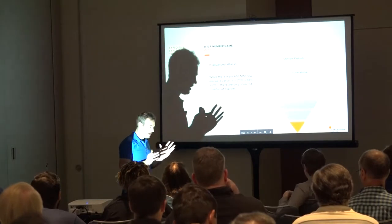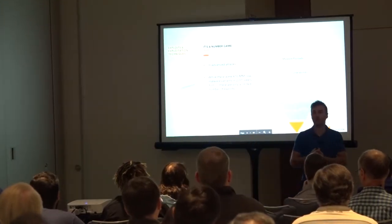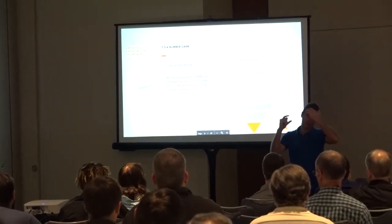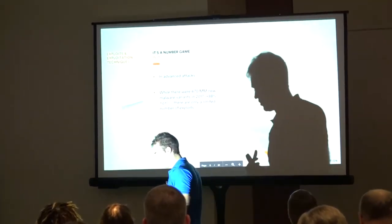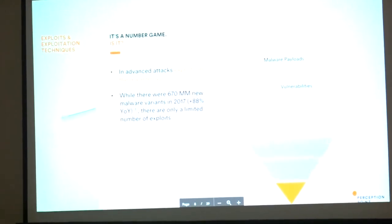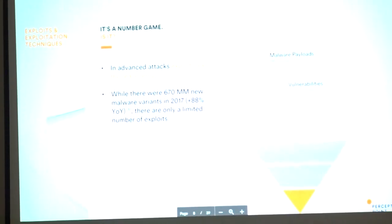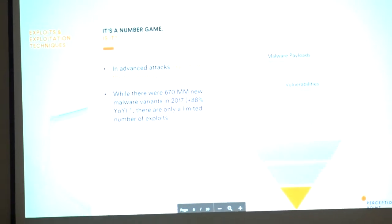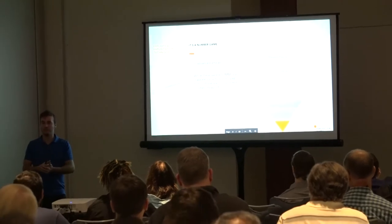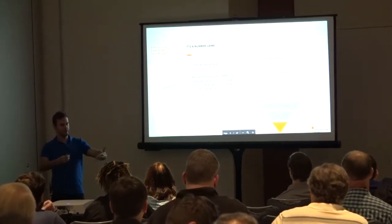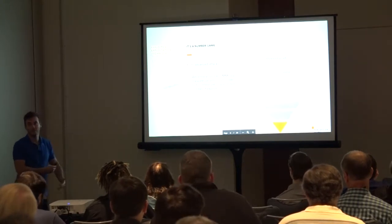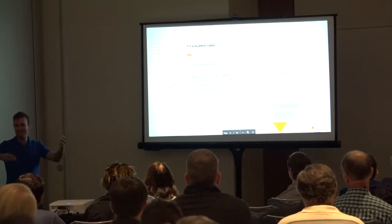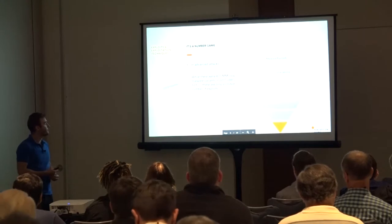Looking at volumes: malware variants come out in the millions every month, because you can mutate a piece of code in almost an infinite number of ways. The industry in the 90s and 2000s was always based on signatures — do I know you or not? But with millions of variants, you can't tag every change. That's how signature-based detection was diffused and bypassed.